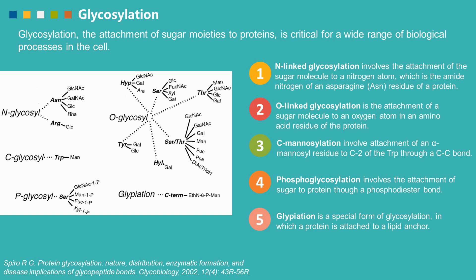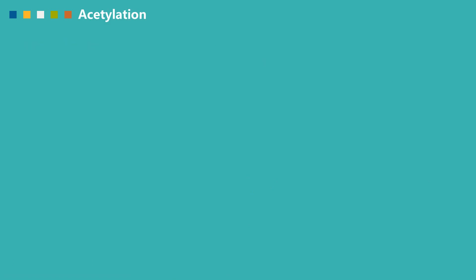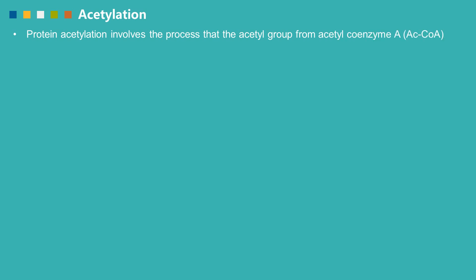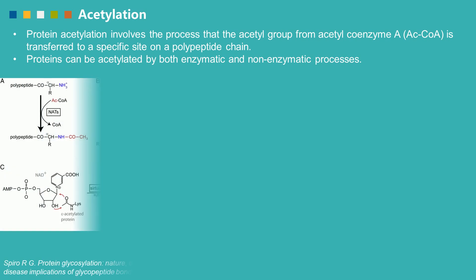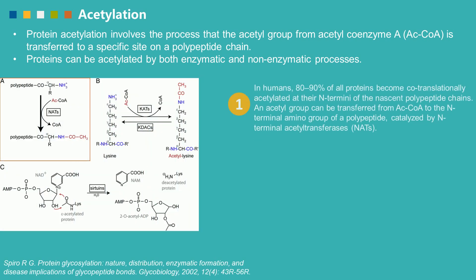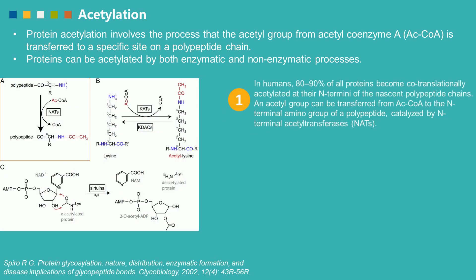Protein acetylation involves the process by which an acetyl group from acetyl-CoA is transferred to a specific site on a polypeptide chain. Proteins can be acetylated by both enzymatic and non-enzymatic processes. In humans, almost all proteins become co-translationally acetylated at the N-termini of the nascent polypeptide chains.